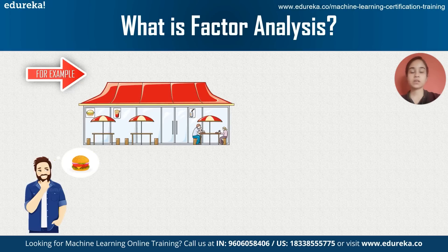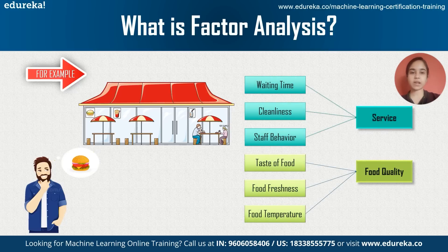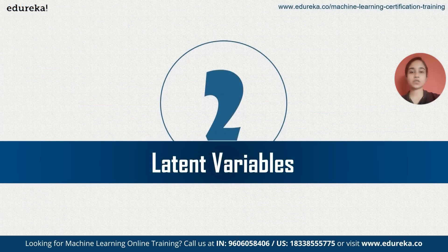Let's take an example of factor analysis. Say you are a foodie and want to pick a restaurant, so you check reviews across six variables: waiting time, cleanliness, staff behavior, taste of food, food freshness, and food temperature. Too many variables make it difficult to choose. The two factors you really care about are service and food quality. These variables can be broadly categorized into these two factors — this is what factor analysis does. Service and food quality are not directly present in the data but are derived from it; these are called latent variables.